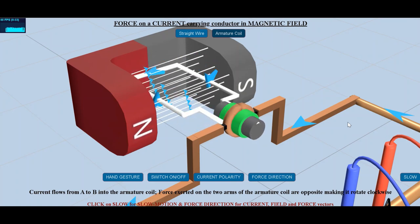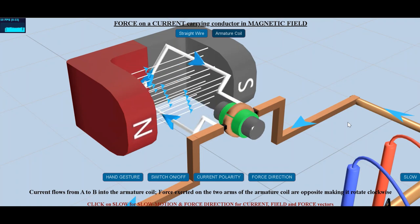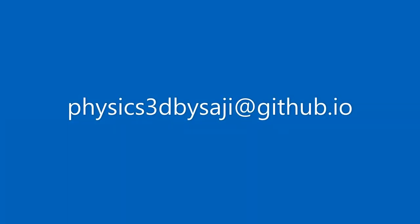This 3D interactive visualization of current carrying conductor in a magnetic field and electric motor is available at the website physics3d by sagi dot github dot io.